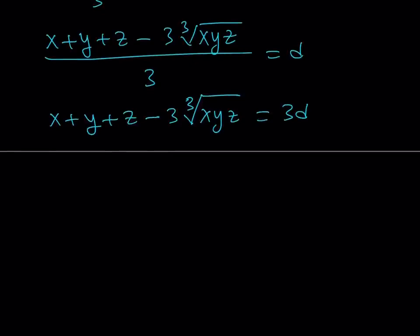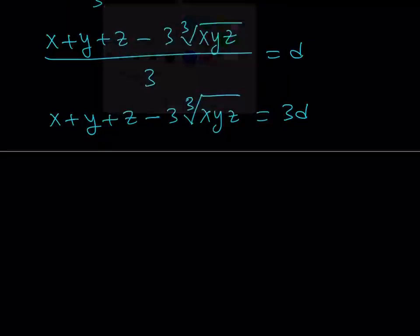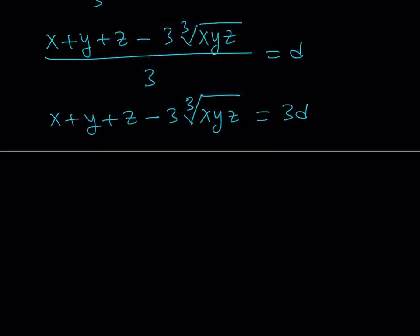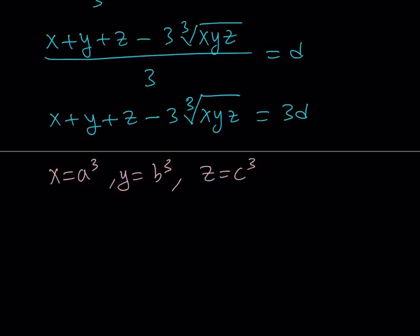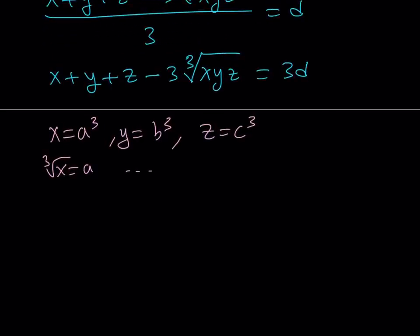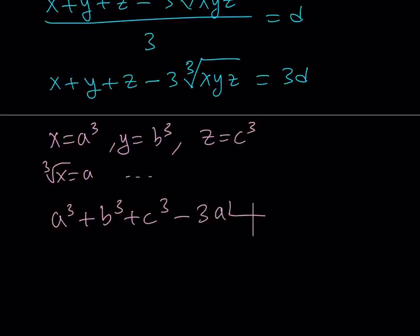We still need to prove this is greater than or equal to zero. I'm going to use substitution — one of my favorite methods. I'll replace X with A cubed, Y with B cubed, and Z with C cubed. This implies the cube root of X is A, and so on. Making these replacements gives us A cubed plus B cubed plus C cubed, and the cube root of XYZ becomes ABC, so the expression becomes A cubed plus B cubed plus C cubed minus 3ABC equals 3D.